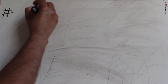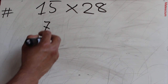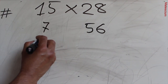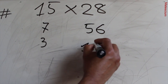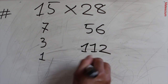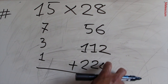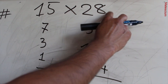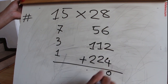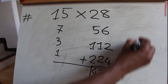Let's try a bigger number: 15 times 28. Make half of 15 — half of 15 means 7.5, do not consider the fraction, write 7. Double of 28 means 56. Half of 7 means 3.5 — write 3. Double of 56 means 112. Half of 3 means 1.5 — write 1. Double of 112 means 224. Now add the right column: 4 plus 2 is 6, 6 plus 6 is 12, 12 plus 8 is 20 — write 0, carry 2. 2 plus 2 is 4, 4 plus 1 is 5, 5 plus 5 is 10, 10 plus 2 is 12 — write 2, carry 1. 1 plus 2 is 3, 3 plus 1 is 4. That means 420 is the answer of 15 times 28.